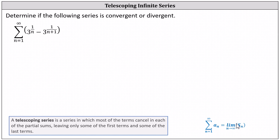If this limit exists, then the infinite series converges and we'll also know what it converges to. If the limit doesn't exist, the series diverges.